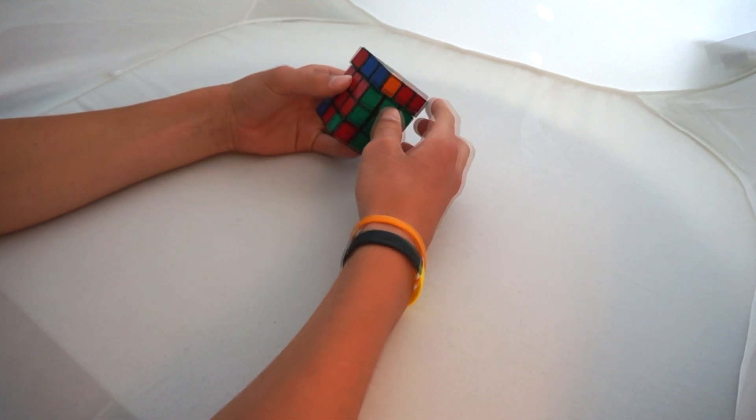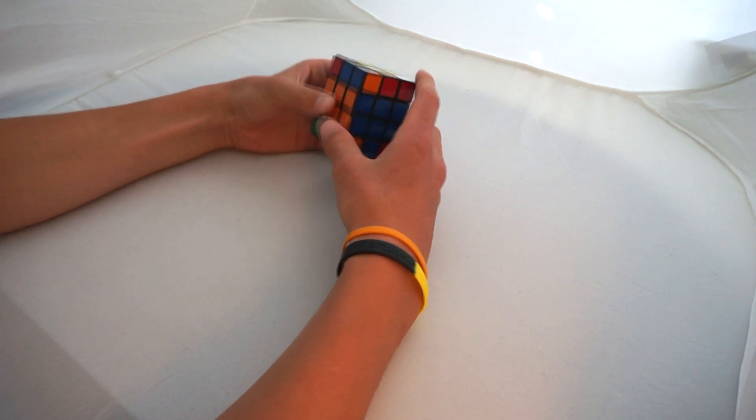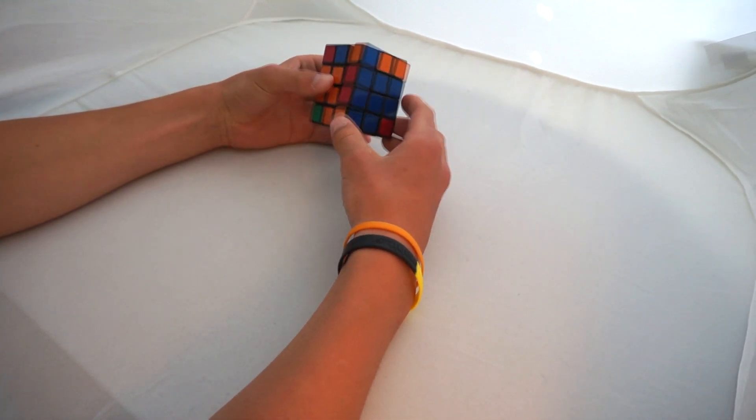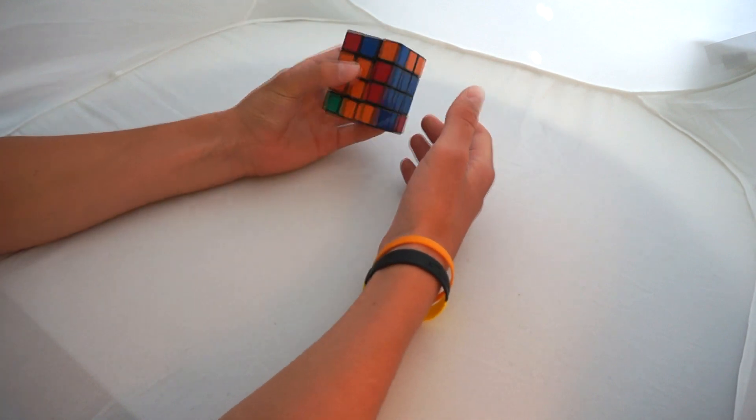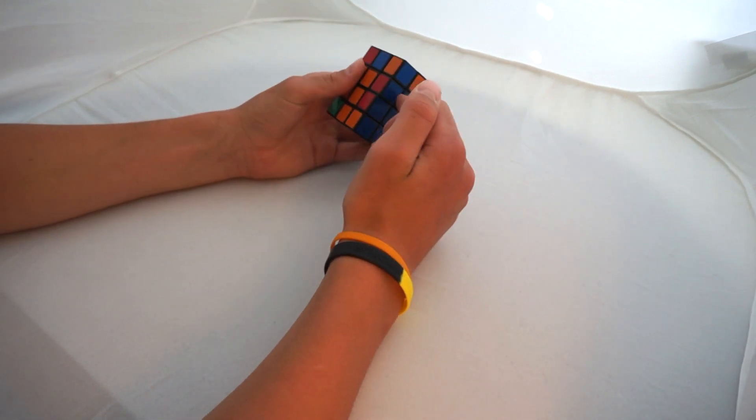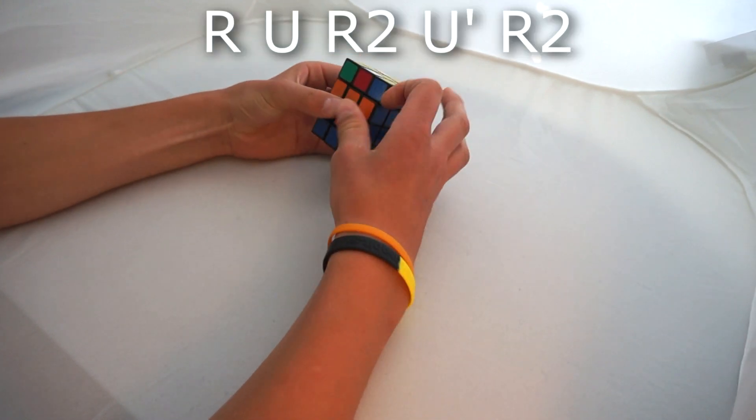And then I repeat the same step as previously and place in the corners. Now, the thing I do is I don't spin it around like that because I could scramble the middle layers, so I just keep it on the same face.